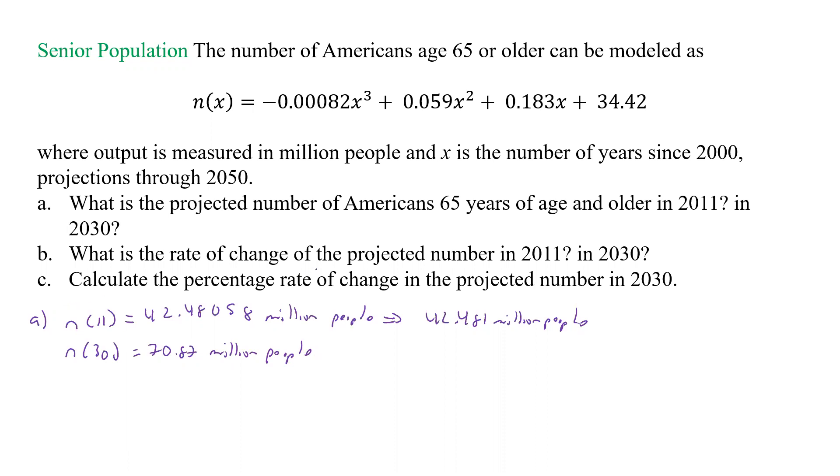Now it says what is the rate of change of the projected number in both of those? Well, that means I'm going to have to find what our derivative is. So n prime of x is going to be equal to negative 0.00246 x squared, and then 0.118 x, and then plus 0.183. That constant is gone. And so that's the function I'm going to use to do part b.